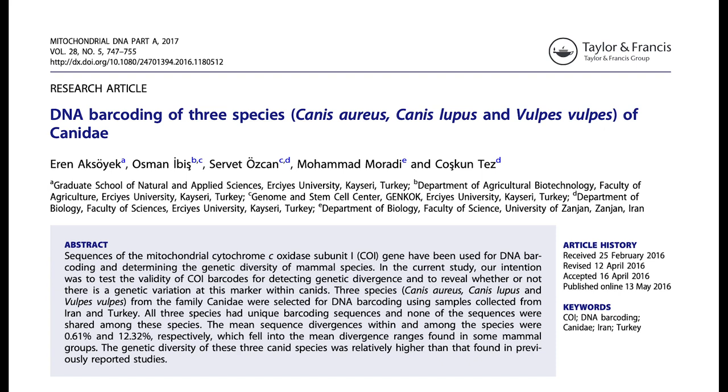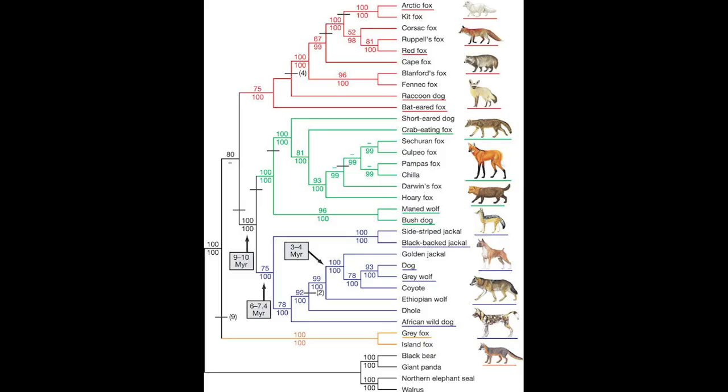He doesn't actually cite any studies that mention any such analysis. That being said, the general claim that dogs, wolves, jackals, and foxes have more similar barcodes to each other than they do to other mammals like bears and otters is trivially true, and is precisely what we would expect according to evolution, since canids share a more recent common ancestor with each other than they do with those other mammals.